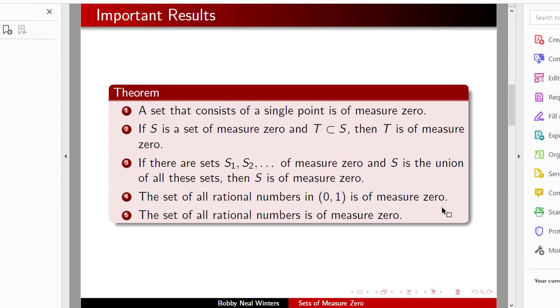Let's prove some things. A set that consists of a single point is of measure zero. If s is a set of measure zero and t is contained in s, then t is of measure zero.